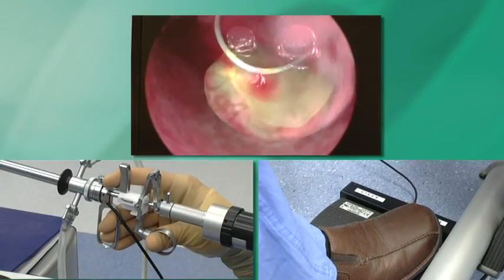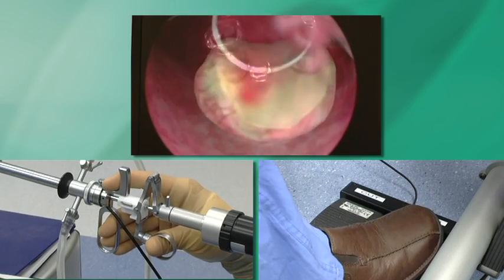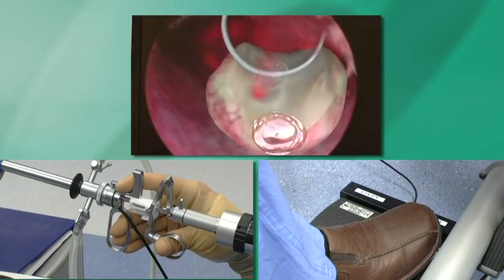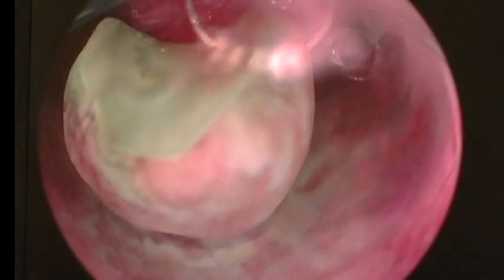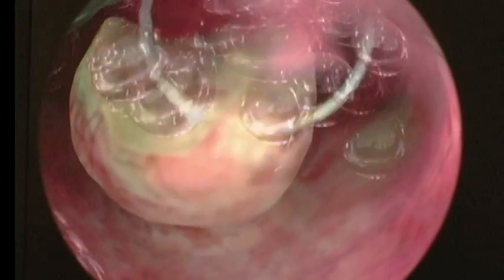It even gives you bleeding from a vascular fibroid, so you can use your coagulation on your loop to take care of the bleeding. You can continue to perform your resection just the way you would normally do on a real patient in a real OR.